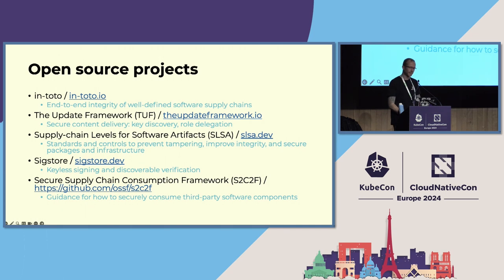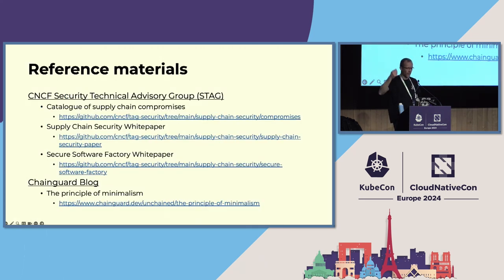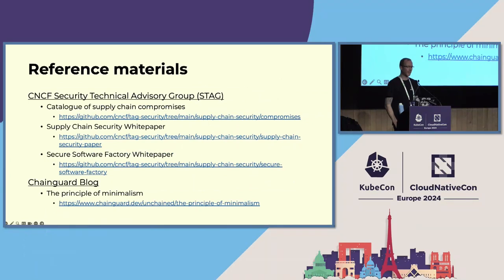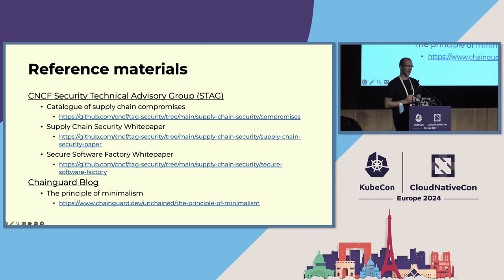The Secure Supply Chain Consumption Framework provides guidance around how to securely consume third-party dependencies. For reference materials, the CNCF Security Technical Advisory Group produces really useful artifacts, including a catalog of supply chain compromises, a white paper on supply chain security, and a follow-on paper describing how to mitigate those problems with a software factory process. I've also linked to the Chainguard blog on the principle of minimalism.